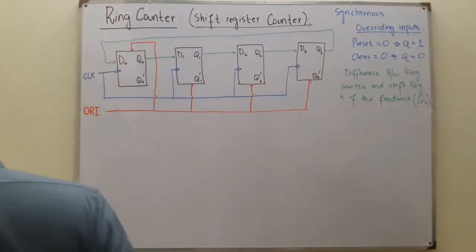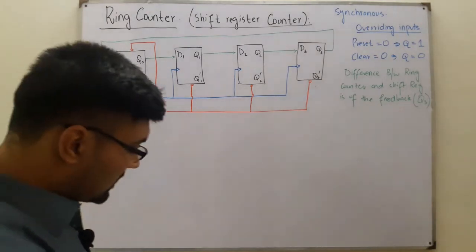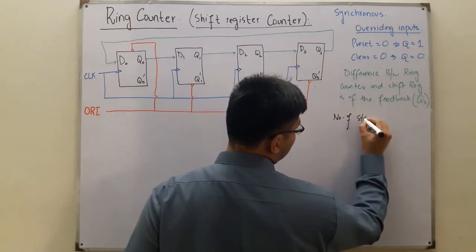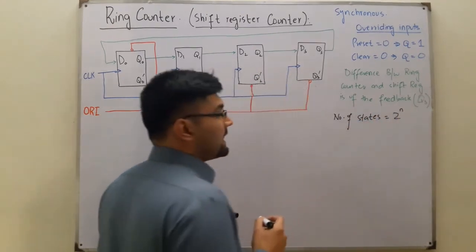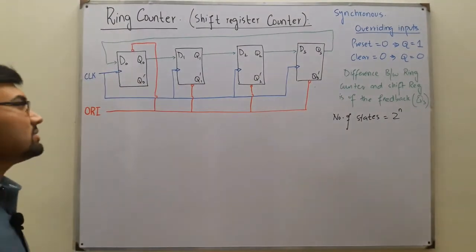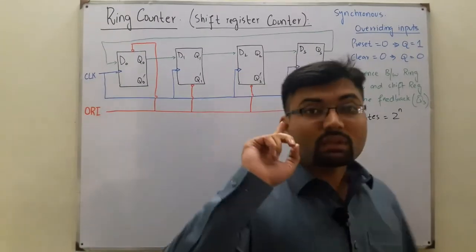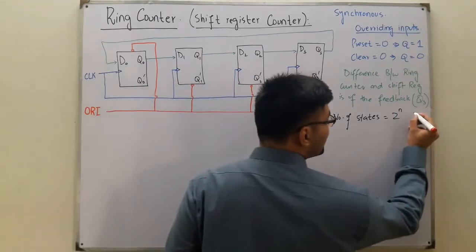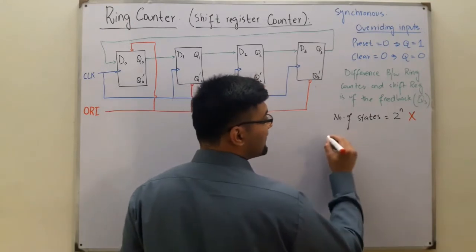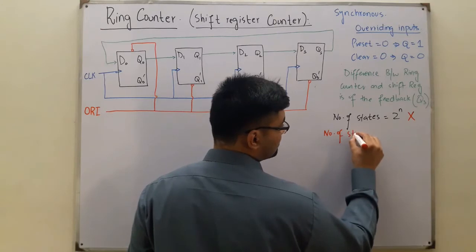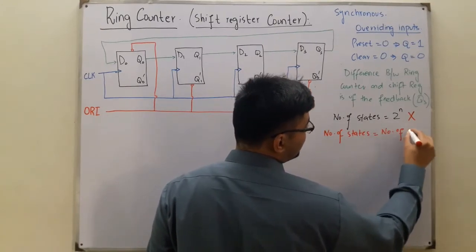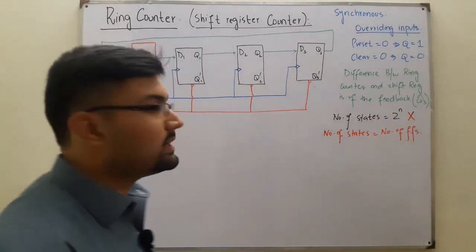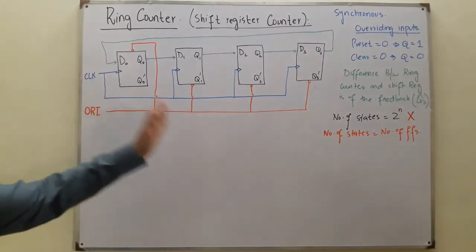From our previous knowledge, the number of states equals 2 to the power n, where n is the number of flip-flops. However, this formula is not valid for the ring counter. Here, the number of states equals the number of flip-flops used, which equals the number of bits. So with four flip-flops we will have four states.